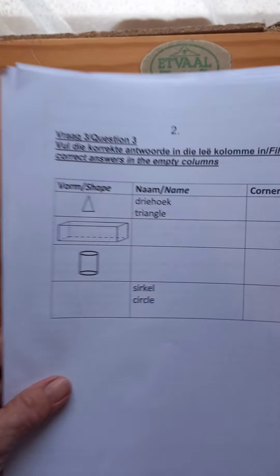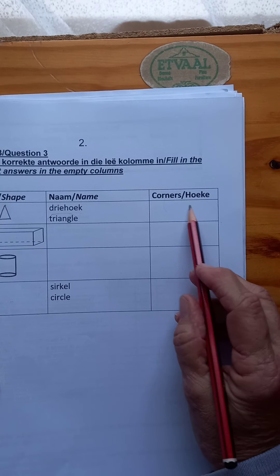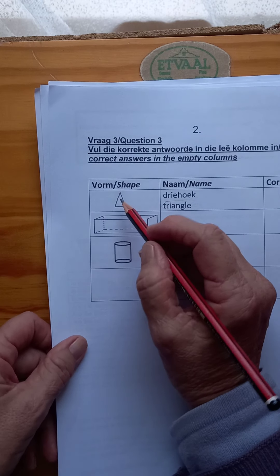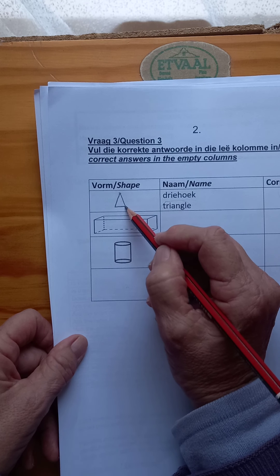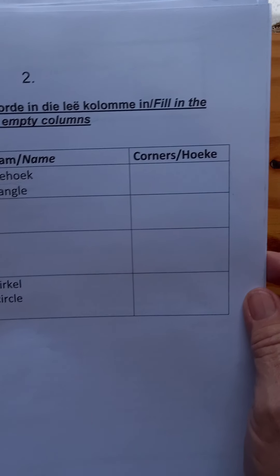When there's an empty space or empty column, then you must make me a triangle. If you look at the triangle and the corners, it is very easy to see: one, two, three. Three corners.